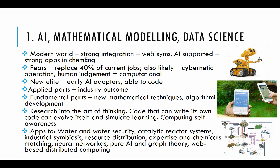Looking at our particular applications in chemical engineering, we are applying these methods in water and water security, with various projects involving Amgeny Water. In catalytic reactor systems, we have industrial partnerships with Johnson & Matthey, the world's largest catalyst manufacturer. We also have work going on with the Durban Chemicals Cluster in industrial symbiosis, where the waste materials from one process may serve as the feedstock or raw feed to another industry — so instead of losing mass from the system, you are internally recycling.